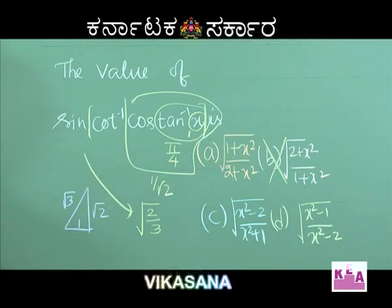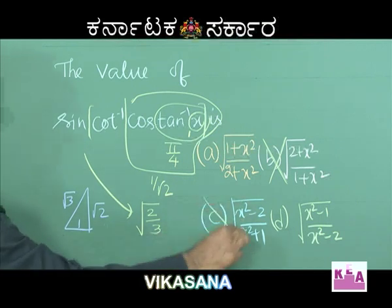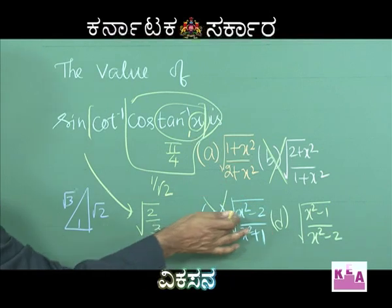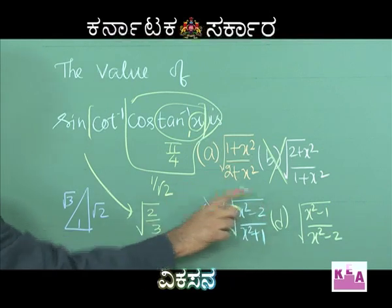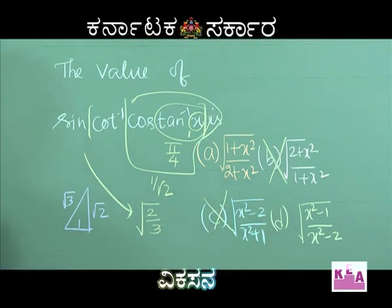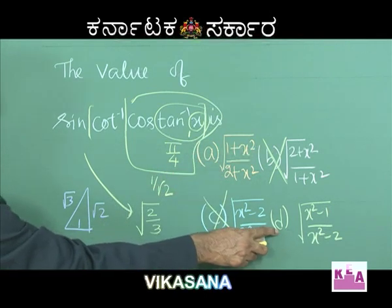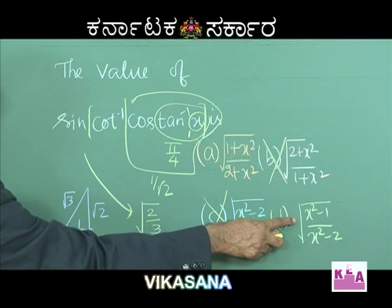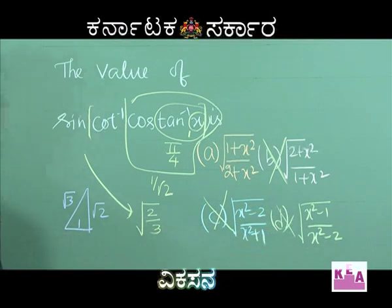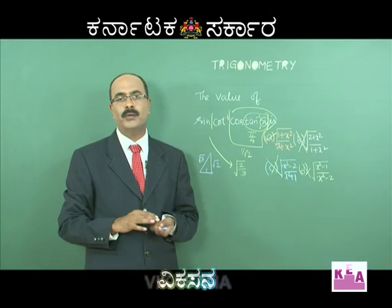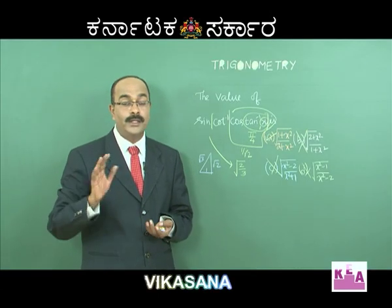Looking at the options, substitute x equals 1. That gives a negative result, which is not correct. If x equals 0, then 1 minus 2 is negative — also not correct. But if the numerator equals 1, then the result equals 0 — that is correct. Let us also try to solve this problem using the traditional method, which will be discussed in the next video.